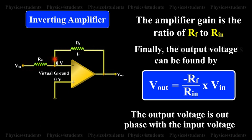Finally, the output voltage can be found by Vout is equal to minus RF by RIN into VIN. The output voltage is out of phase with the input voltage.